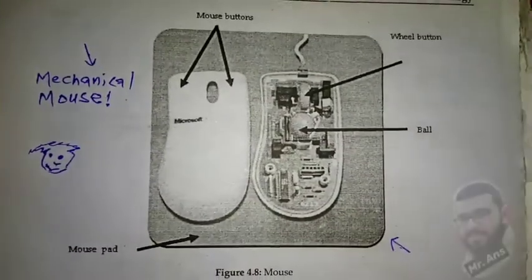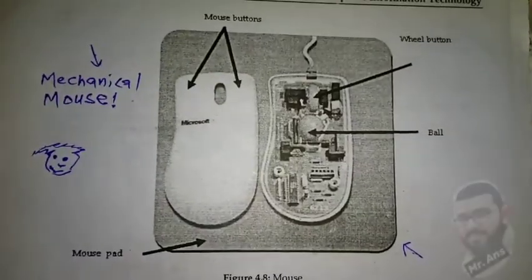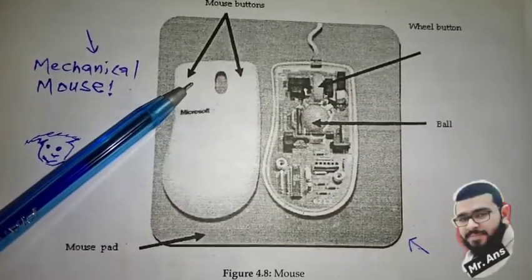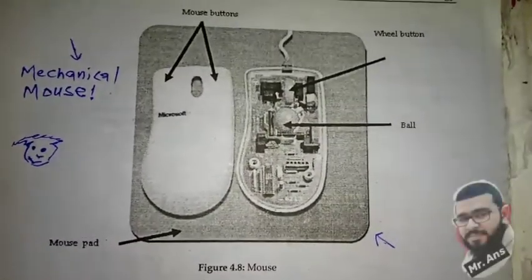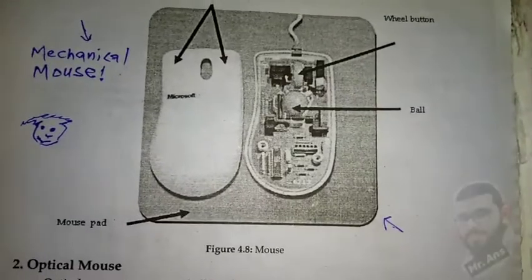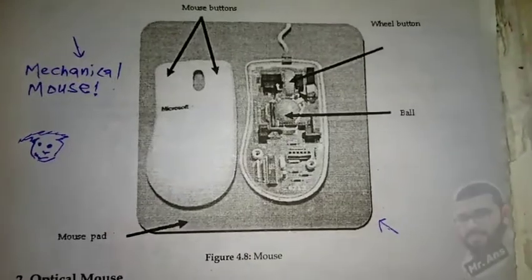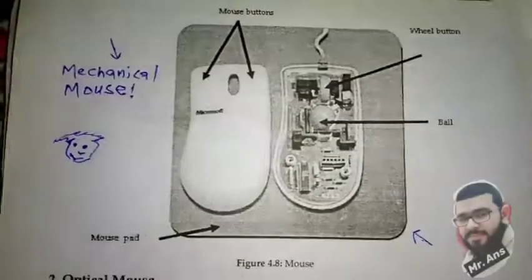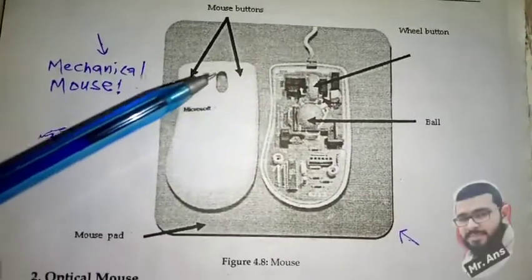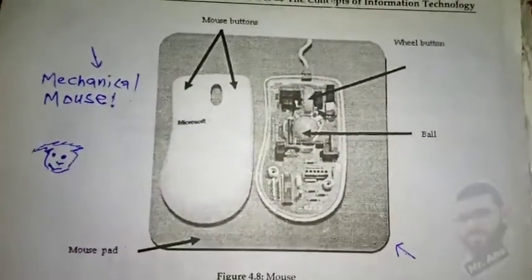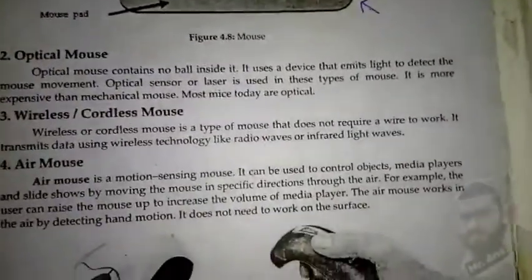There are two buttons inside this mouse: right click and left click. On the front side we can see the left click and right click. The mechanical mouse is the simplest kind of mouse. It also has a wheel, two buttons, and a ball which rotates the cursor on the screen.